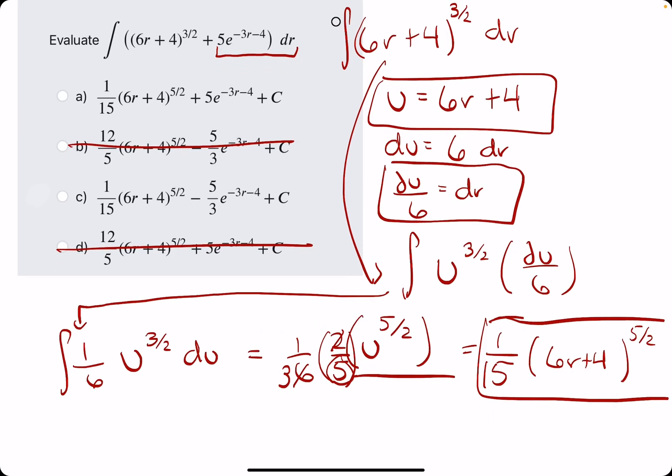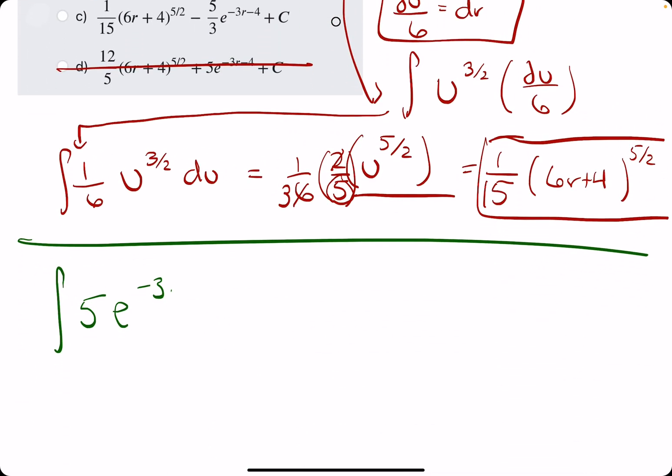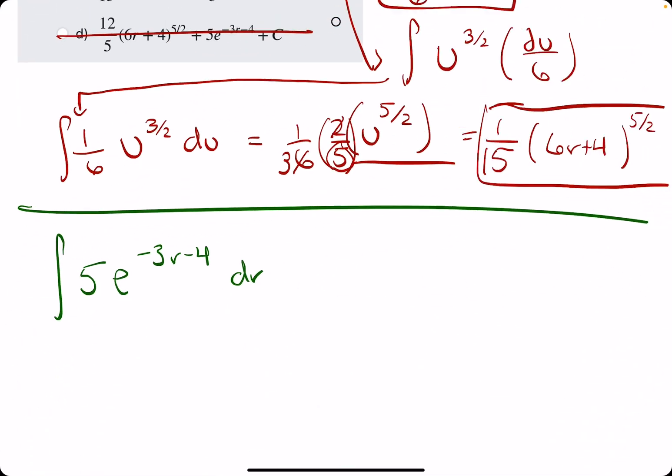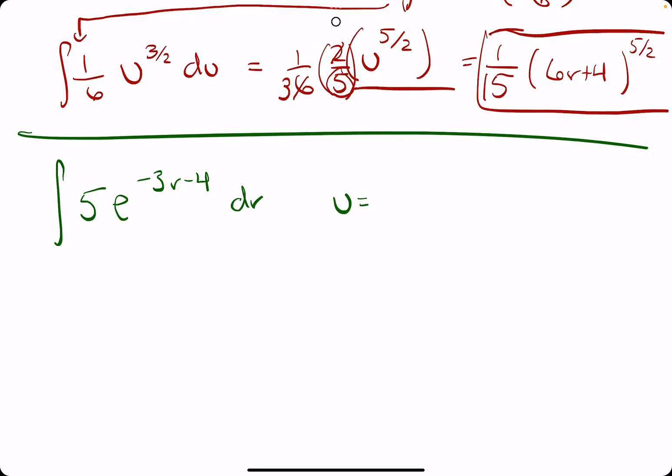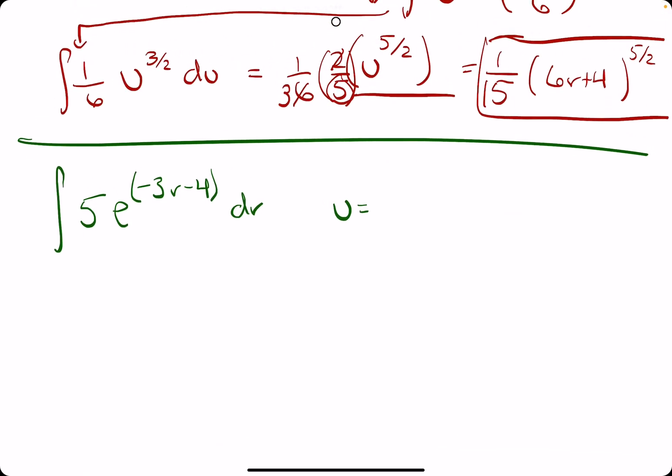We're doing the integral of 5e to the negative 3r minus 4 dr. So we want to identify our u. Our u is on the inside. It's not necessarily in parentheses here, but it's in an exponent being acted on by some other term, the e. So we have negative 3r minus 4. We find its derivative, negative 3. Tack on dr. dr equals du over negative 3.